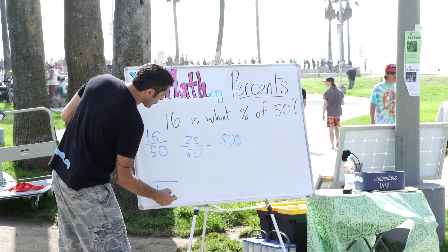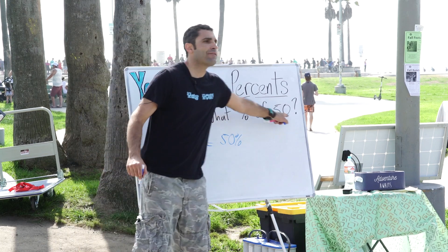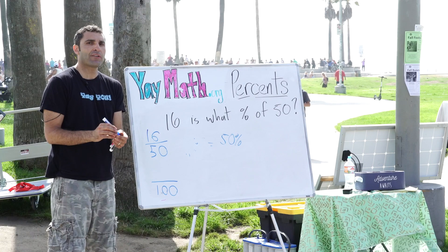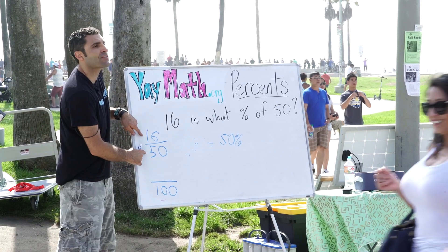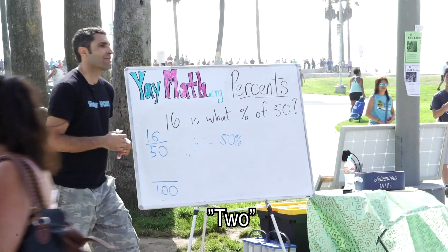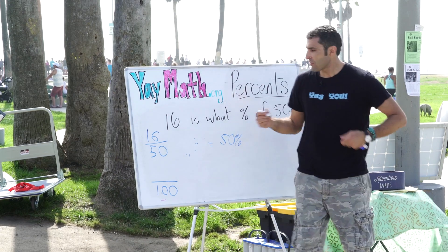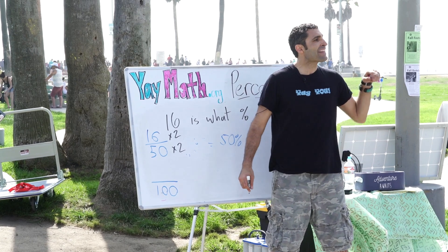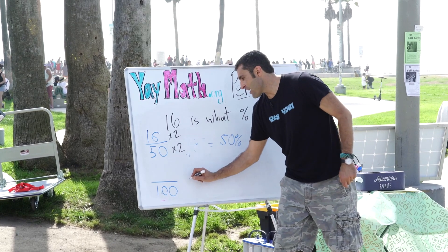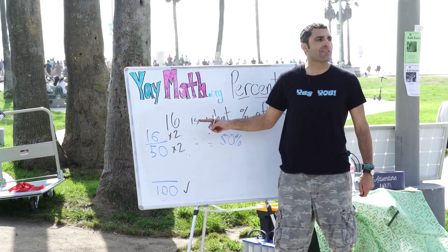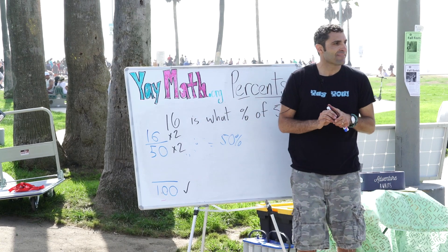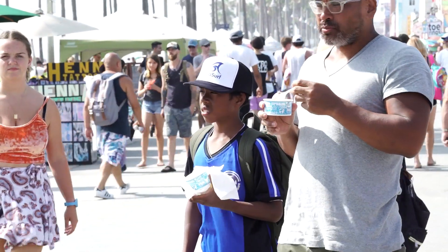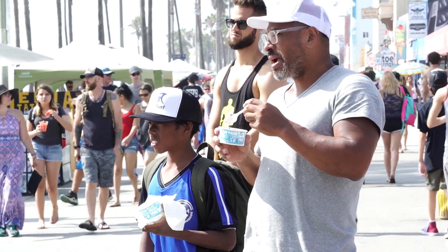So, 16 over 50 — if you can get it to something over 100: 16 compared to 50. What do we do with both these numbers so it becomes over 100? Times 2! You got that right. Times 2 and times 2 — so 50 times 2 is 100, and then 16 times 2? 32 is correct, man — 32!